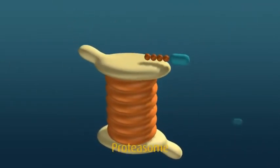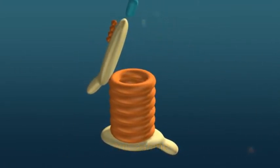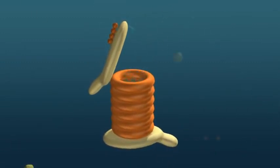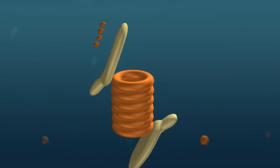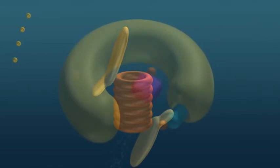The proteasome binds and removes the polyubiquitin chain and unfolds the protein. The protein is threaded through the proteasome chamber where it's chopped up into building blocks to be reused for the synthesis of new proteins. The ubiquitin can also be recycled.